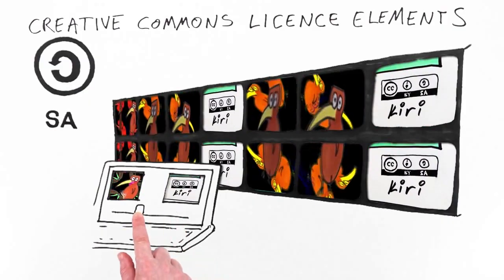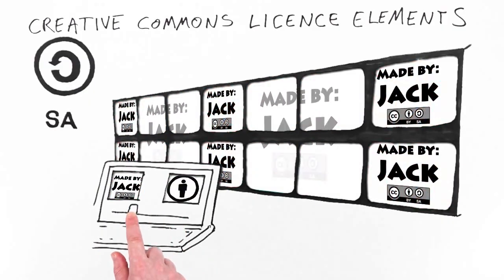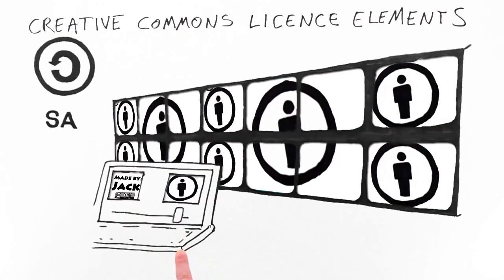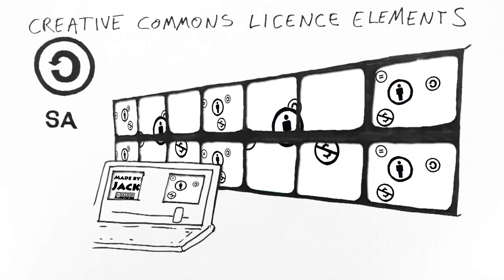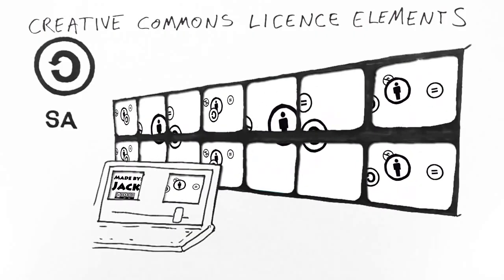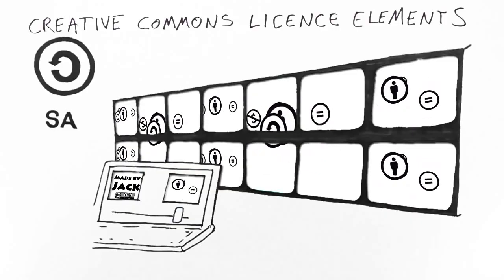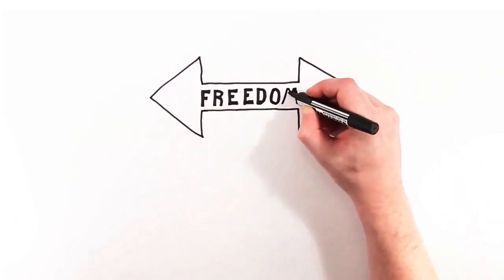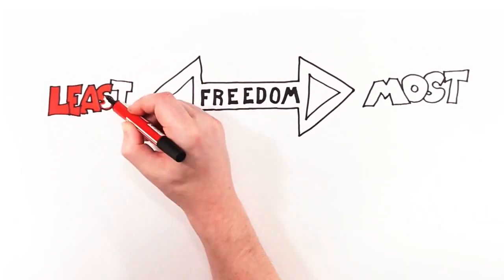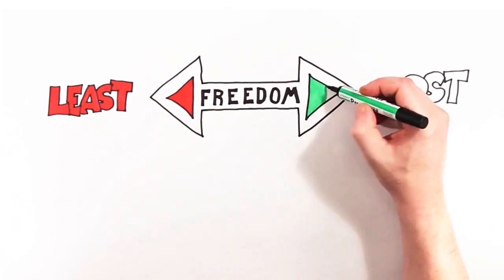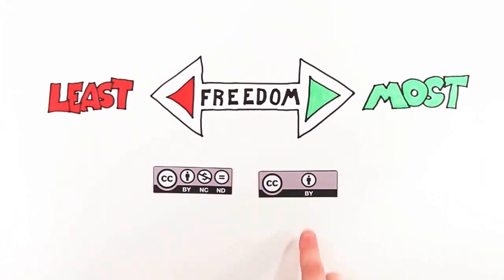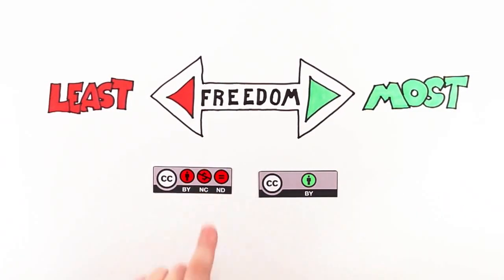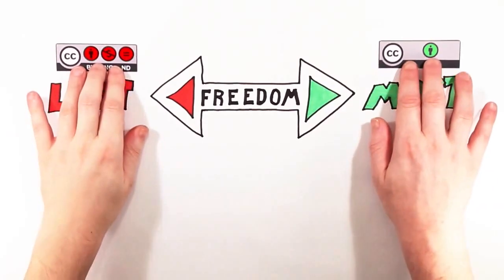Each Creative Commons license gives permission to share and includes the attribution rule. So people who find your Creative Commons licensed work are automatically allowed to share it, but are required to acknowledge you if they do. The other three license elements are optional and you can choose which ones to add, if any. Here are the six combinations that make up Creative Commons licenses. The difference between them is how many rules apply when someone wishes to use your work. The attribution license allows re-users the most freedom, and the attribution non-commercial no derivatives license allows the least freedom.